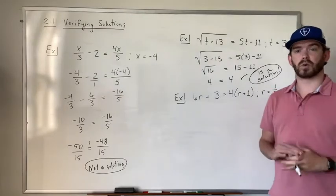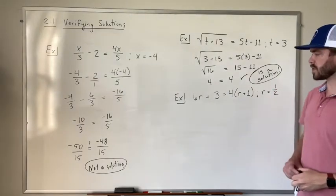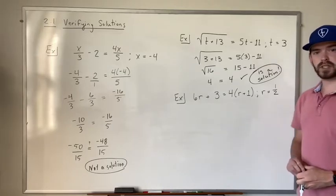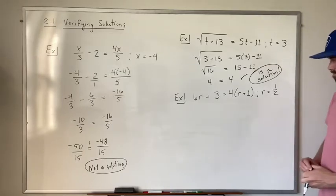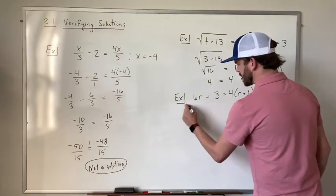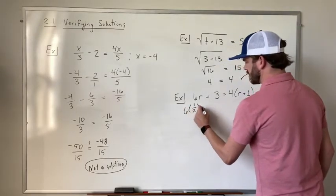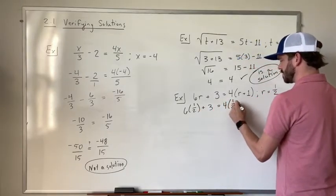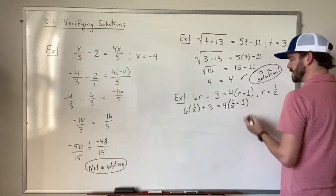All right, we have one more. We have 6r plus 3 is equal to 4 times r plus 1. And our solution is 1 half. So let's plug this in and see what we get. So we get 6 times 1 half plus 3 is equal to 4 times 1 half plus 1.